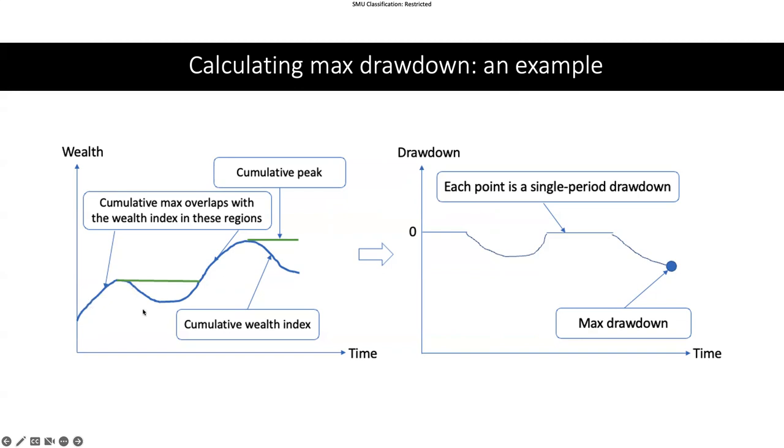But if the price starts to decrease, my cumulative peak stays the same because there's no prior value that's higher than this point. So it stays flat and then continues to grow, then starts to overlap again, and then becomes flat again. This is the curve of the cumulative peak.